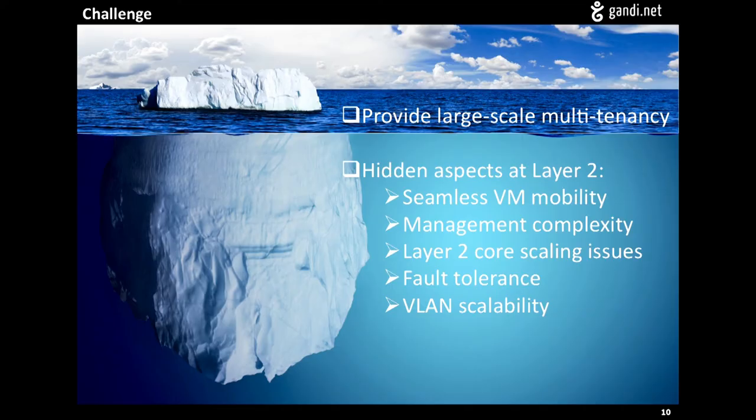This is what we call the challenge of large-scale multi-tenancy. So the multi-tenancy with all of these different customer VLANs in the cloud, private VLANs in the cloud. And the challenge of delivering that kind of multi-tenancy is actually hidden mostly at layer 2 of the network. We want to preserve the advantages that we currently have. We want to preserve the ability to move VMs around from node to node. We want to preserve that lack of management complexity that we got when we got near complete automation.